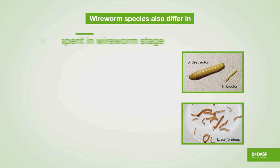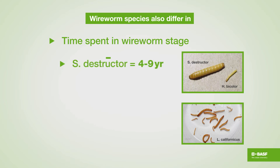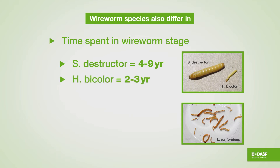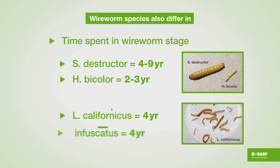The time spent in the wireworm stage differs between certain species. The big guy I just showed you takes four to nine years to go through its life cycle. The small guy, two to three years. In the Pacific Northwest, these species tend to take about four years to go through their life cycle.